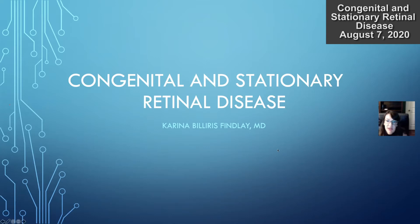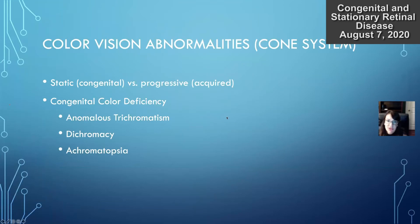Our next lecture will be congenital and stationary retinal diseases, from chapter 12. This is a short chapter, which is why I combined it — it's related to chapter three. This will talk about color vision abnormalities and night vision abnormalities. The cone system is responsible for color vision, and the rod system for night vision.